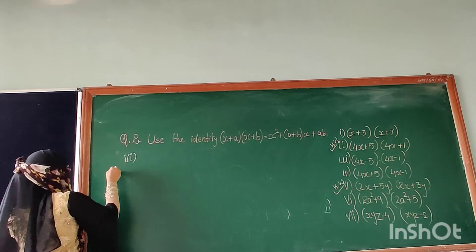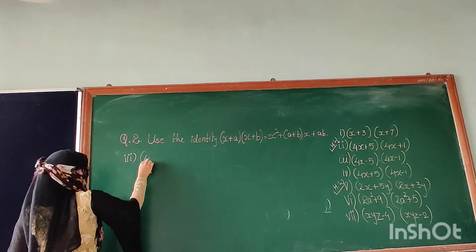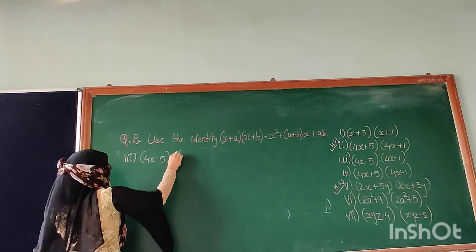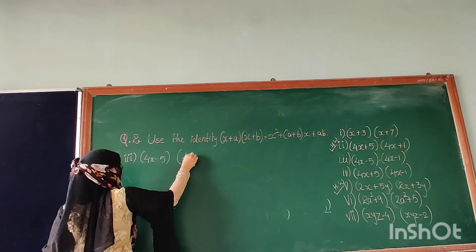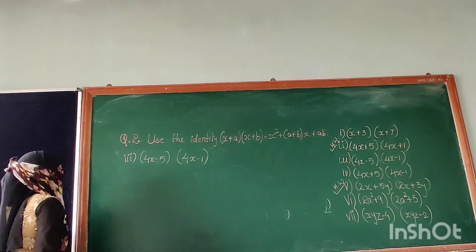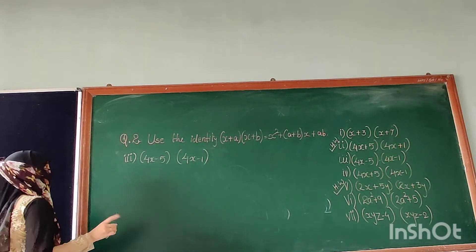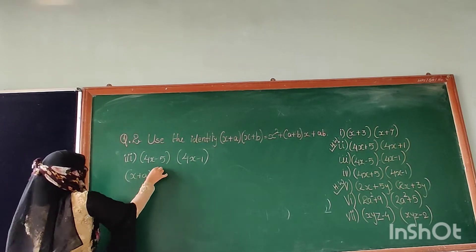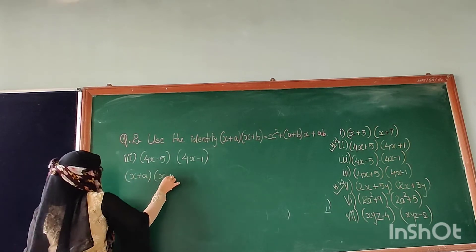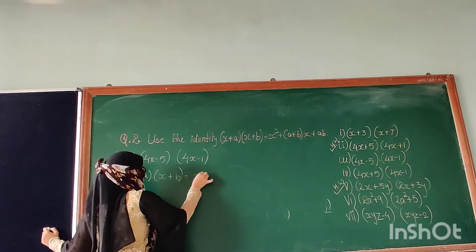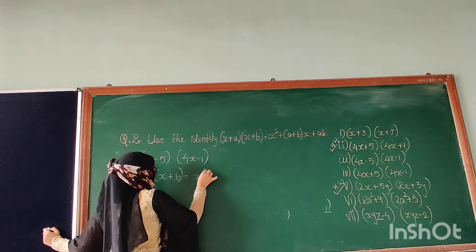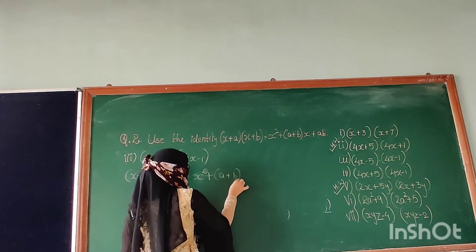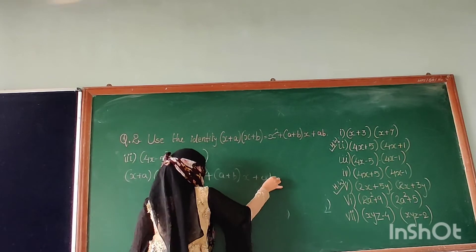So what is the third sum? It is (4x minus 5) and (4x minus 1). So what is the first step? We will write down the identity: (x plus a)(x plus b) equals x squared plus (a plus b)x plus ab.